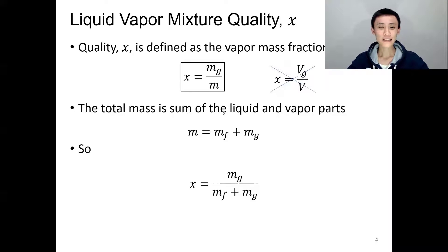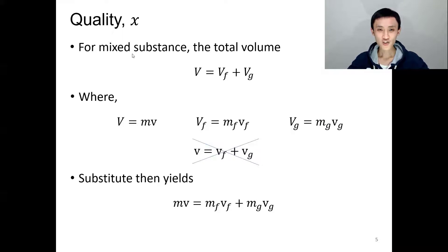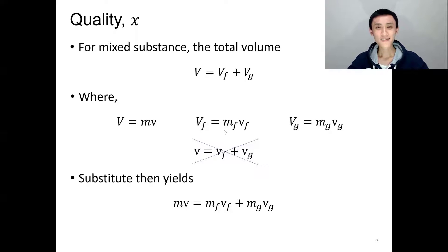The total mass is the sum of liquid and vapor mass: m_total = m_liquid + m_vapor. For the mixture, the total volume equals the volume of liquid plus the volume of gas. Volume is always mass times specific volume, so the volume of liquid is m_liquid times v_f, and the volume of gas is m_gas times v_g.